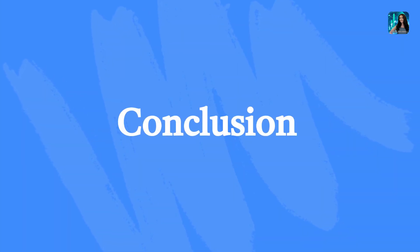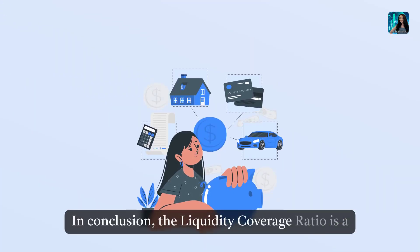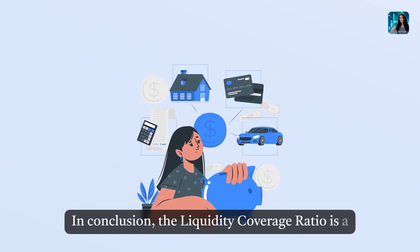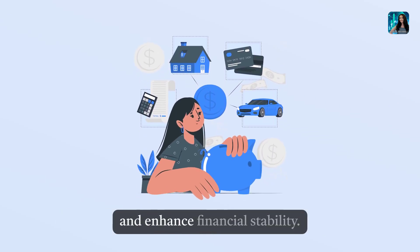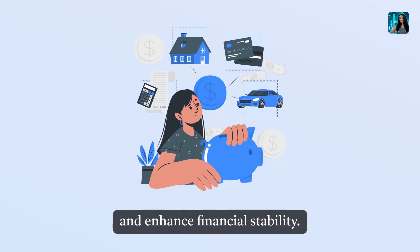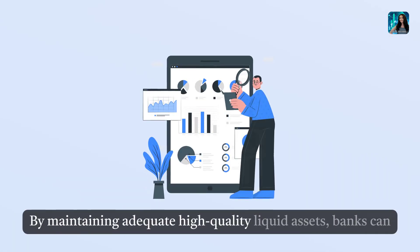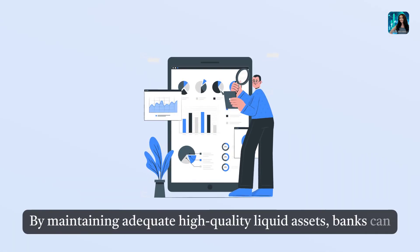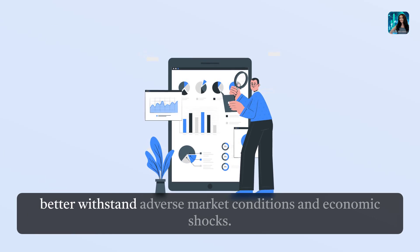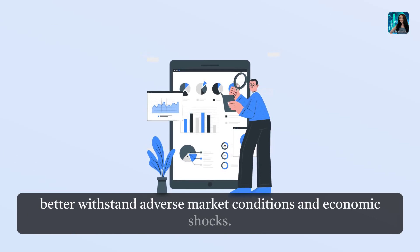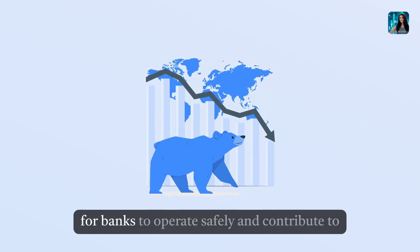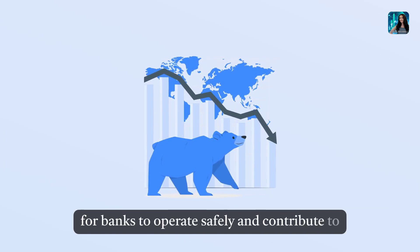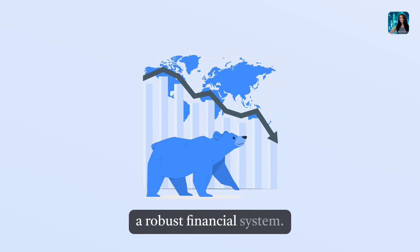In conclusion, the Liquidity Coverage Ratio is a critical tool that helps banks manage liquidity risk and enhance financial stability. By maintaining adequate high-quality liquid assets, banks can better withstand adverse market conditions and economic shocks. Understanding and complying with the LCR is essential for banks to operate safely and contribute to a robust financial system.